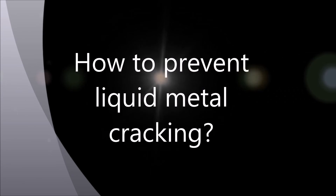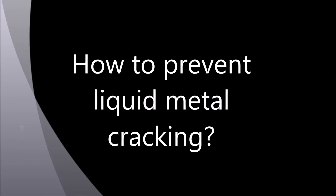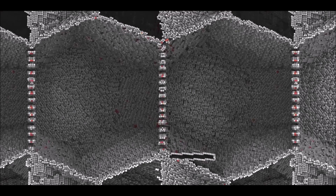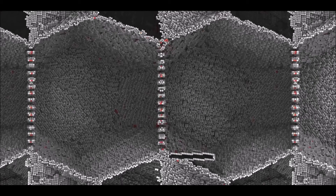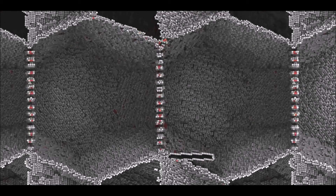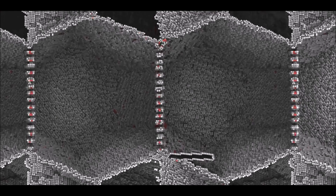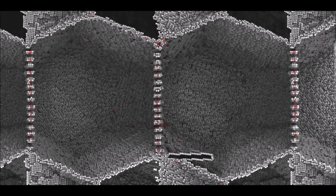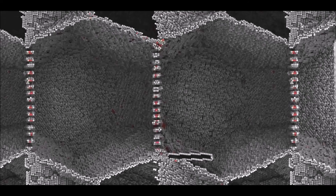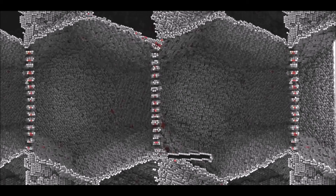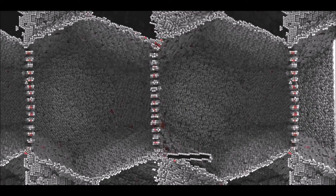A surprising finding could lead to a self-healing material that repairs incipient damage before it has a chance to spread. The answer turned out to lie in how grain boundaries interact with cracks in the crystalline microstructure of a metal — in this case, nickel, which is the basis for the superalloys used in extreme environments such as deep sea oil wells.